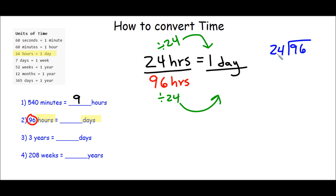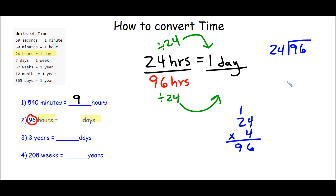24 is really close to 25 because that's an easy number to work with, and 96 is really close to 100. 25 goes into 100 four times, so 24 times 4 should get me really close to 96. Let's do that: 4 times 4 is 16, 4 times 2 is 8, plus 1 is 9. It's 96! So we're going to plug in 4 here. 4 times 24 gives me 96, so we're done. There are 4 days in 96 hours.